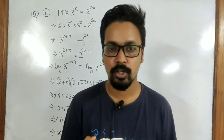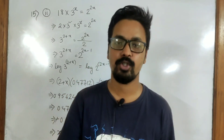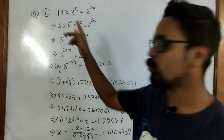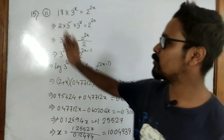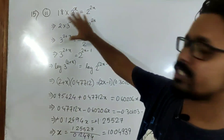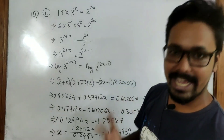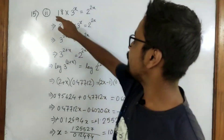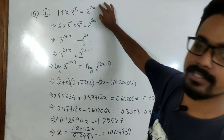I am going to do 3 sums from question number 15. It has 5 sums from 1 to 5. We are starting off with question number 2. Question number 1 is easier — if you can solve question number 2, you can easily solve question number 1. Here in question number 2, we have to solve for x. What is given is 18 into 3 to the power x equals 2 to the power x.